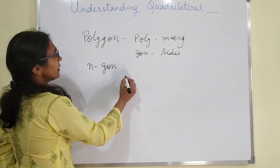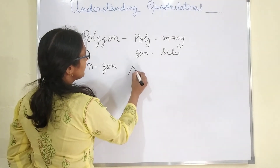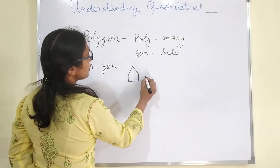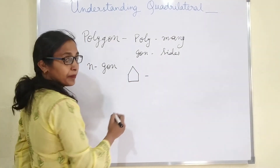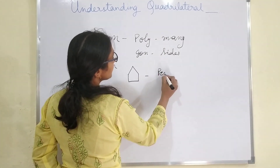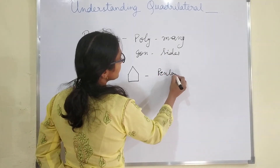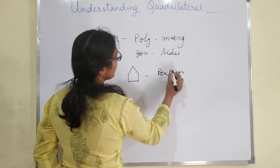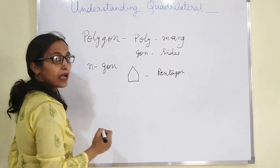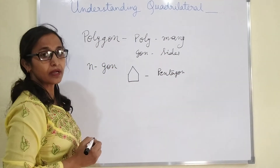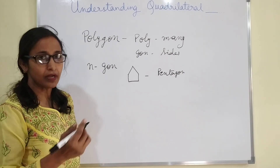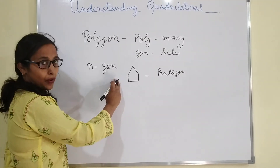Now, if any figure has 5 sides, that is called a pentagon. So the names are: pentagon, hexagon, heptagon, octagon, nonagon, decagon, and n-gon.